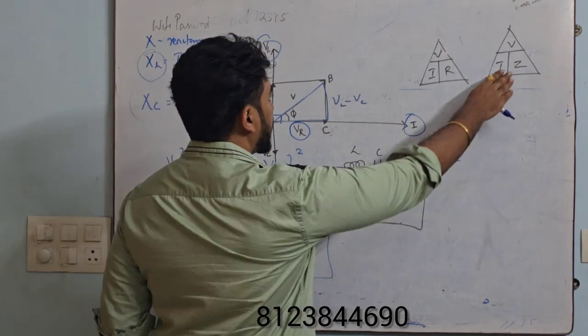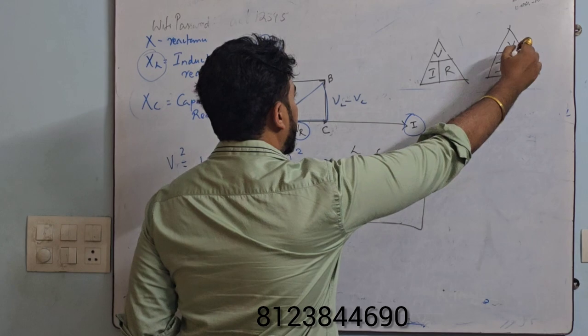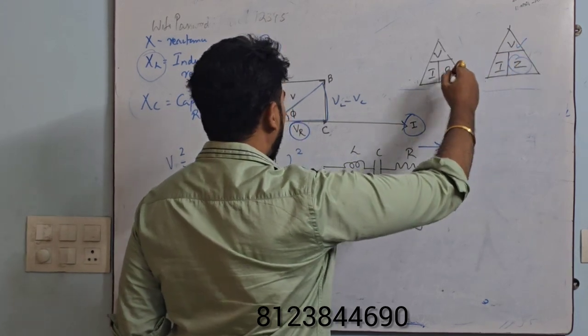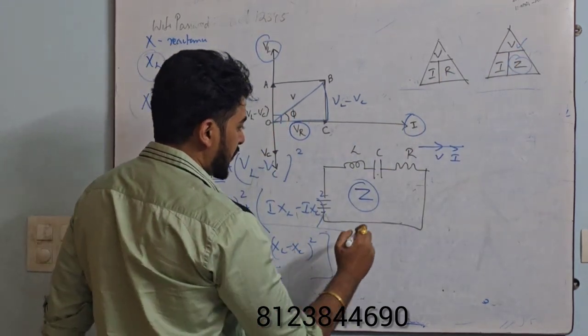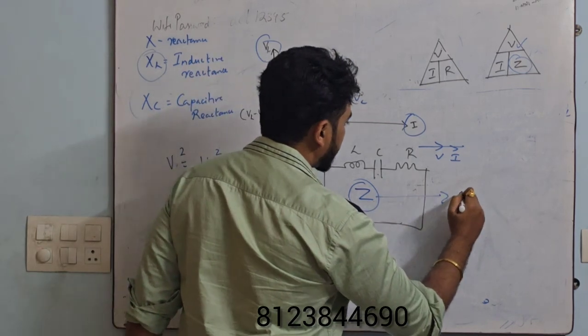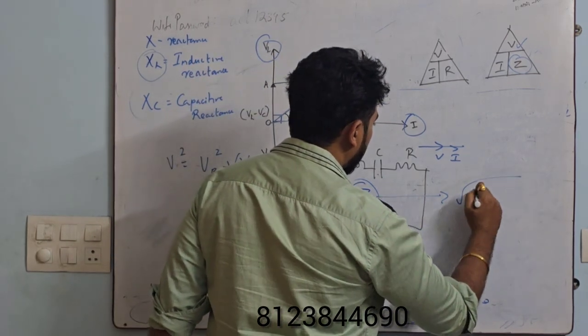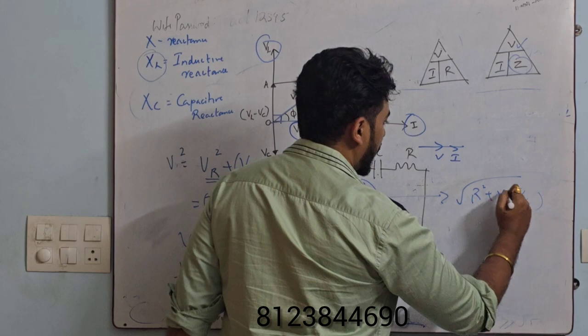Root of R² + (XL - XC)² whole square. Now V/I is what? My impedance Z. V/I is my impedance Z. We should not write R, this is for the total voltage. V/I is nothing but impedance Z. So Z = √[R² + (XL - XC)²].